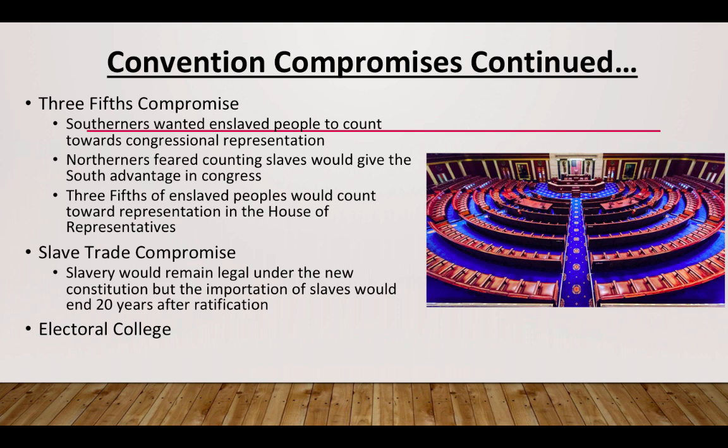So slavery did not come to an end as an institution, but slave importation was supposed to come to an end. Finally, the Electoral College — something referred to as indirect representation. When you vote for president, you're not directly voting for that specific candidate; it's through the Electoral College, an indirect election of the executive who would serve a four-year term.